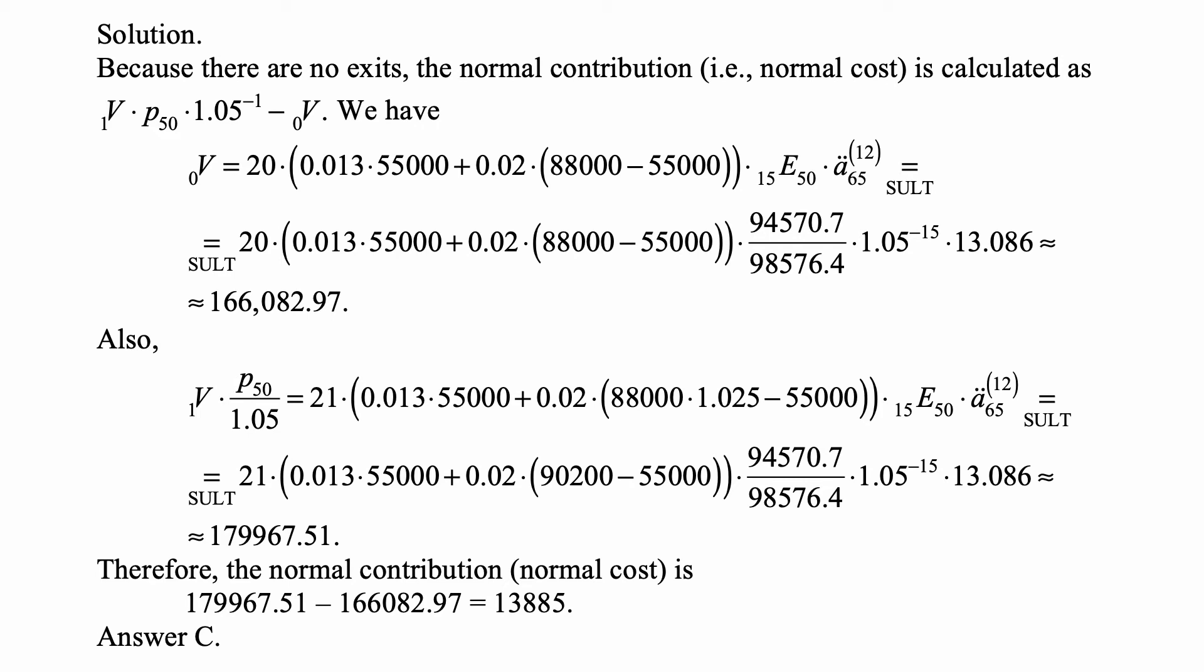multiplied by the 15-year discount factor at 5% a year. A double dot 65 up to 12 is known to be 13.086, and everything else is given. And so we calculate this, and that's approximately 166,082.97.